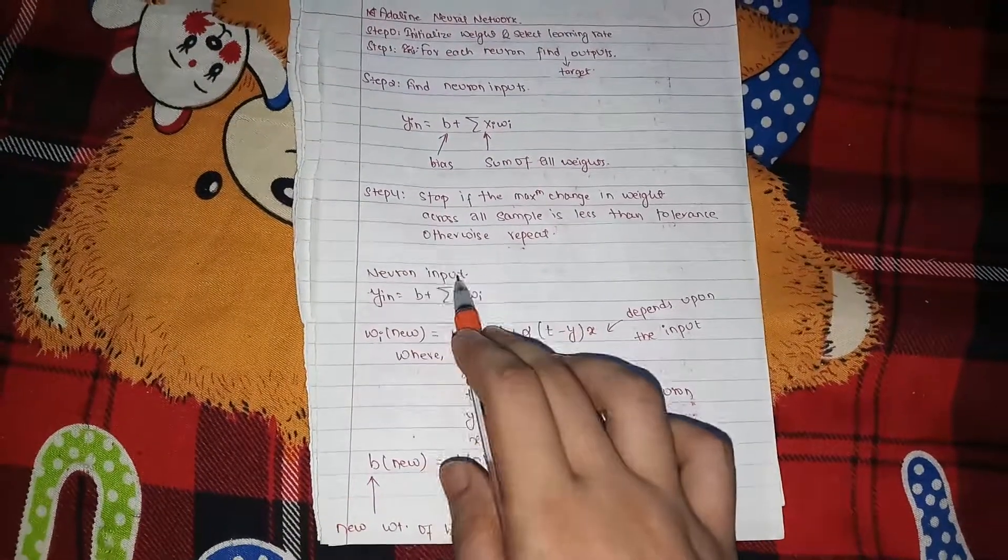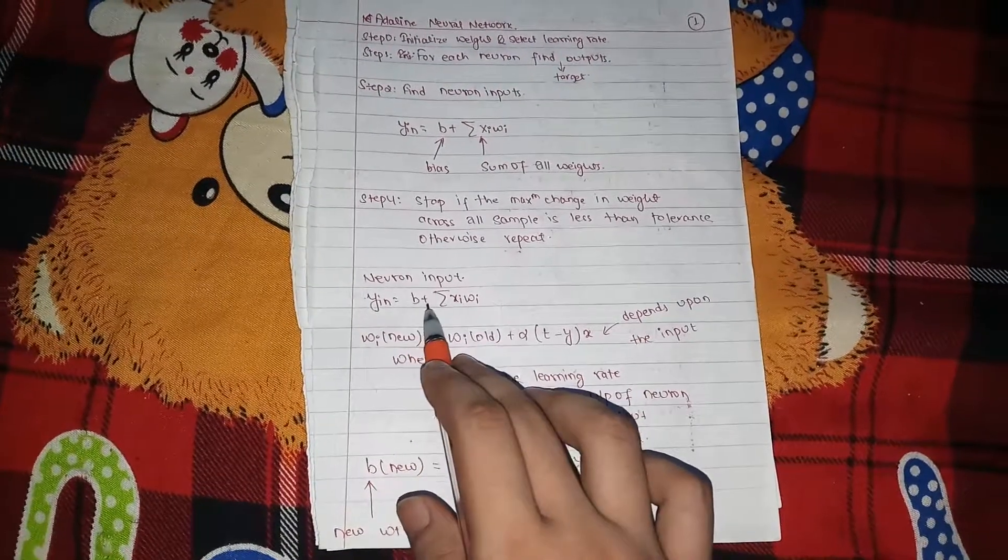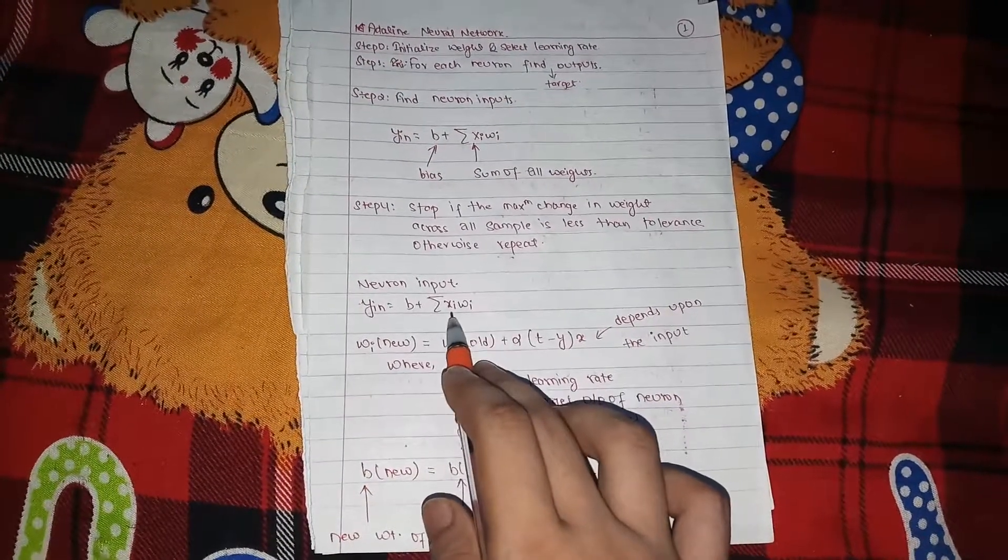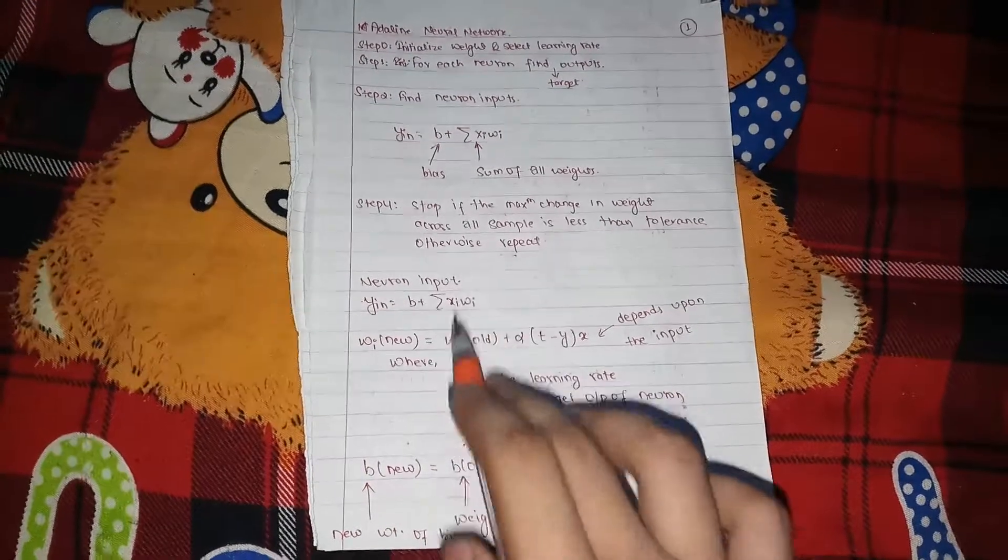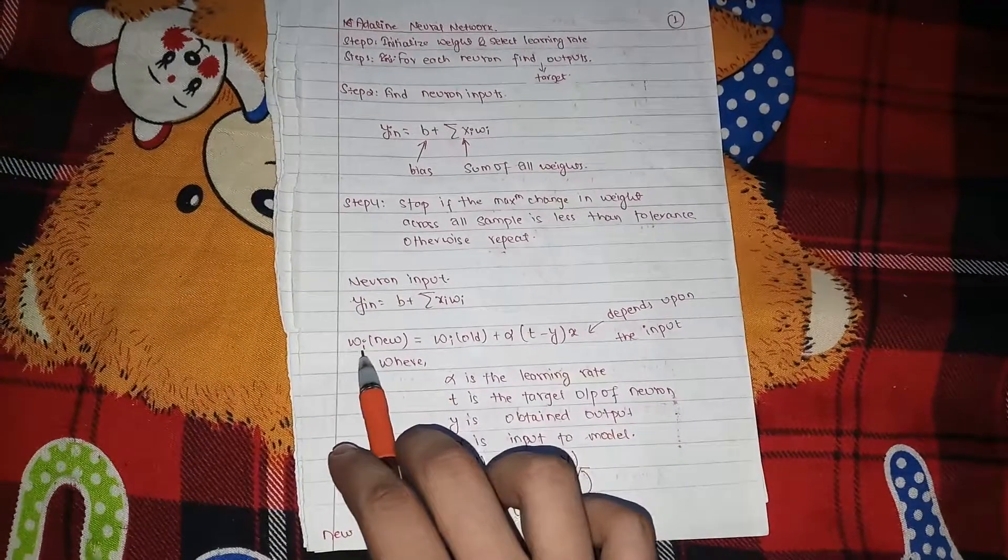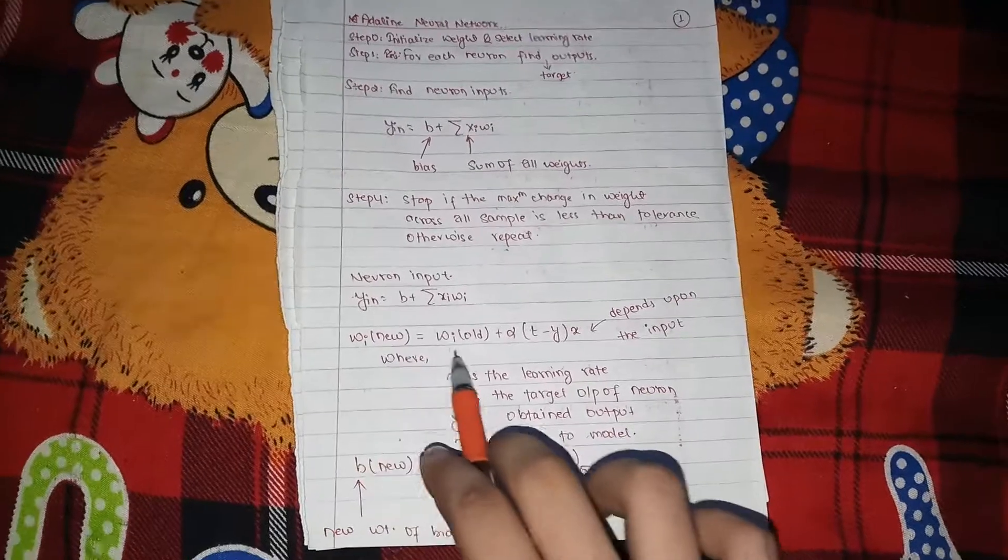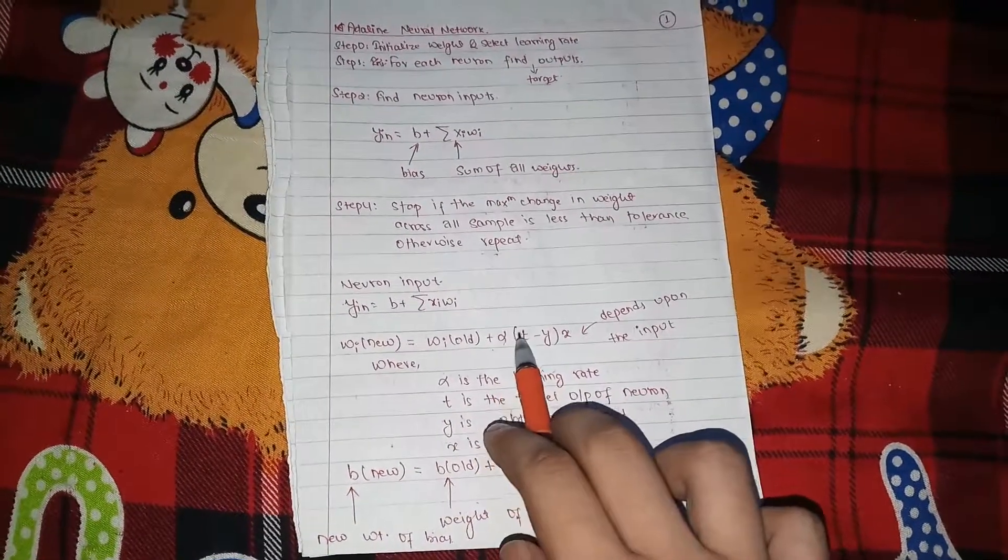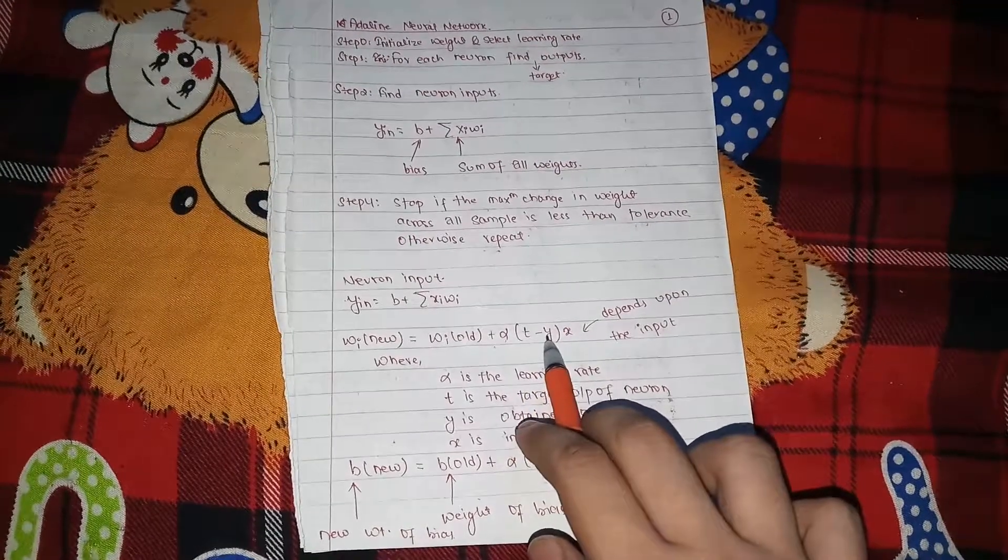Neuron input is Y in equals to B plus summation of all the XI plus WI. XI is the input, WI is the weights. So what is the WI new? WI new is equals to WI old plus alpha times T minus Y times X.